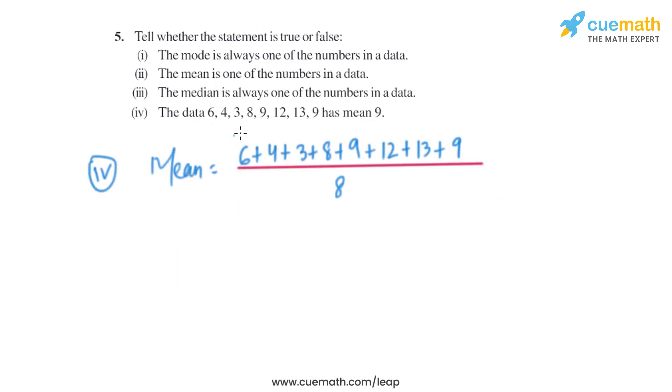In the fourth part we will find the mean of the data that is given. We will add the numbers that are given and divide it by 8 because there are eight numbers given. After adding them we will get 64, and we will divide it by 8, which is the same as 8. We have not got the mean as 9, so this statement is basically false.